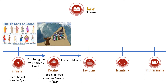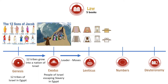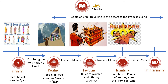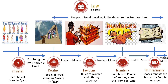In the book of Leviticus, God provides instructions to build the tabernacle so they could worship him according to his rules. He also instructs them how to offer different sacrifices. Moses is still their leader. In the book of Numbers, God instructs Moses to take account of the number of people in different tribes before they enter the promised land.